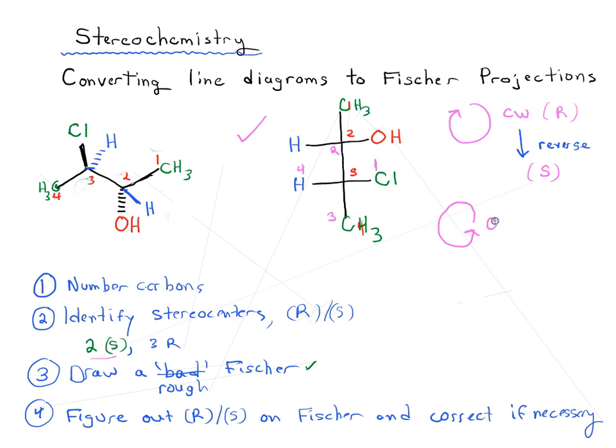But again, our H is pointing out of the page. So we actually, again, reverse, and it's actually R. So just by blind luck, we've actually drawn this correctly, but I didn't plan that. It's drawn, we guessed correctly that this is 2S 3R.